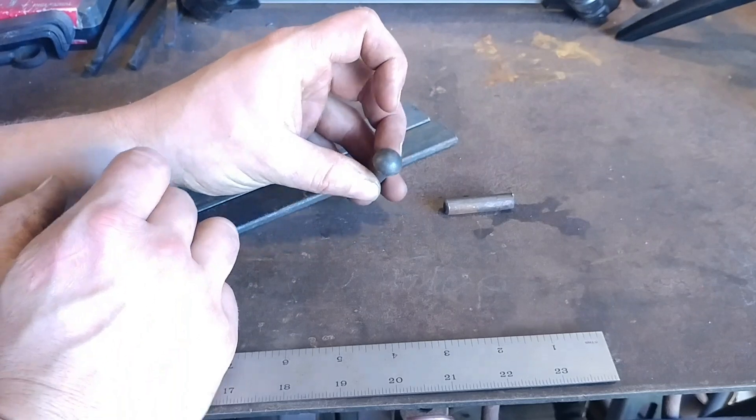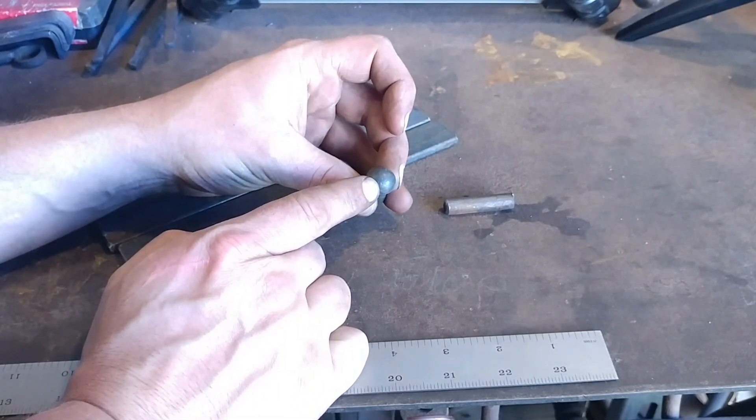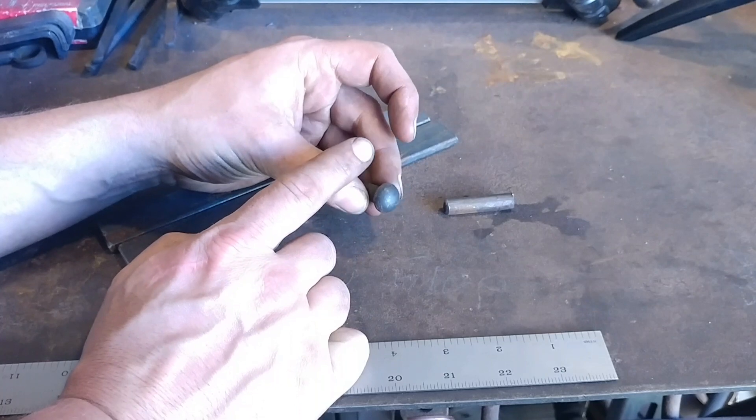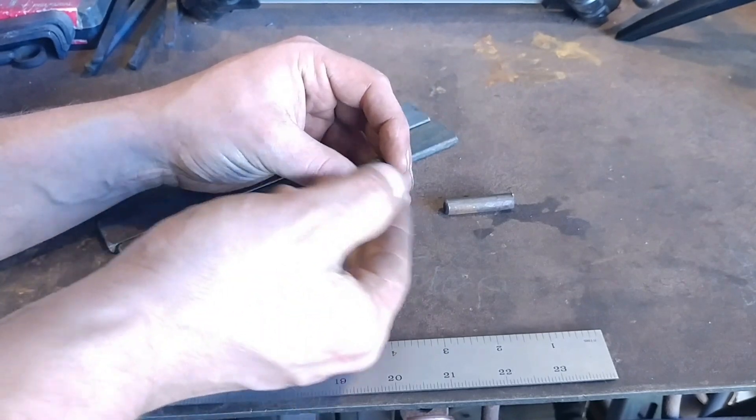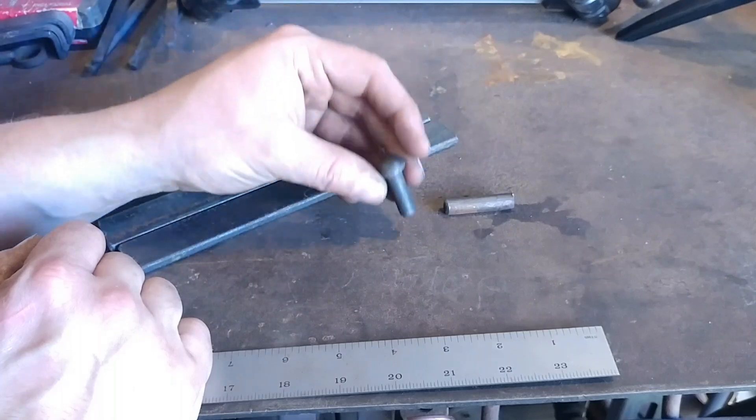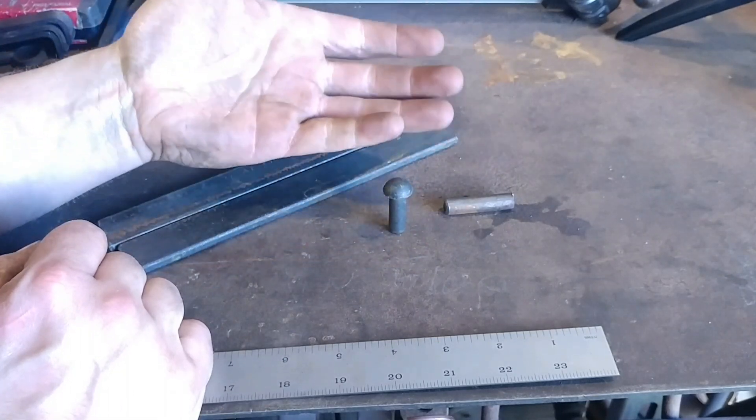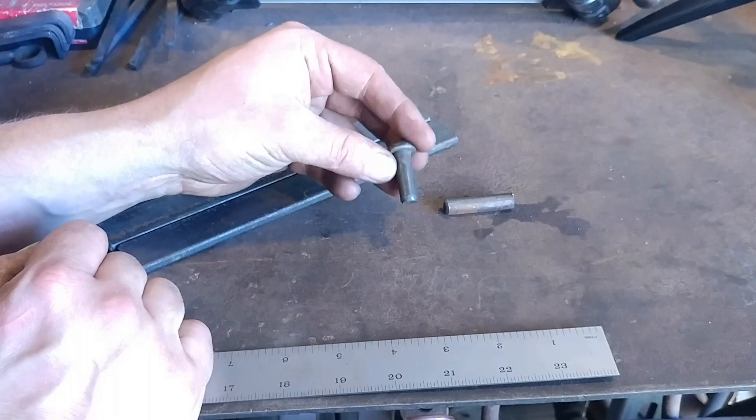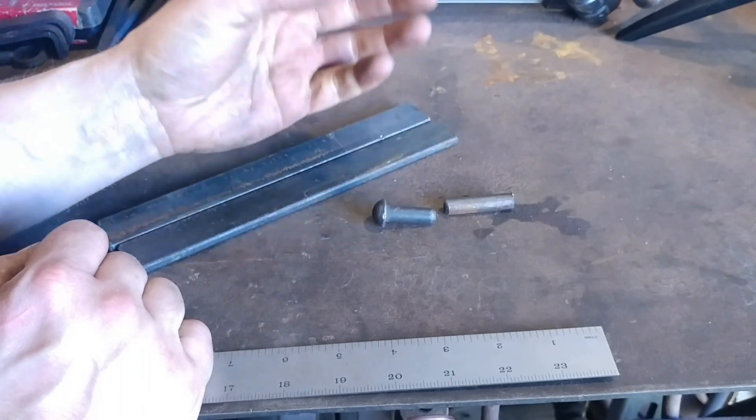The first thing that you have to determine is what style head you are going for for the rivet. Is it going to be a flat head? Is it going to be flush? Is it going to be recessed down into a chamfer of some kind, a pocket? You have to know what type of rivet you are going for to begin with.